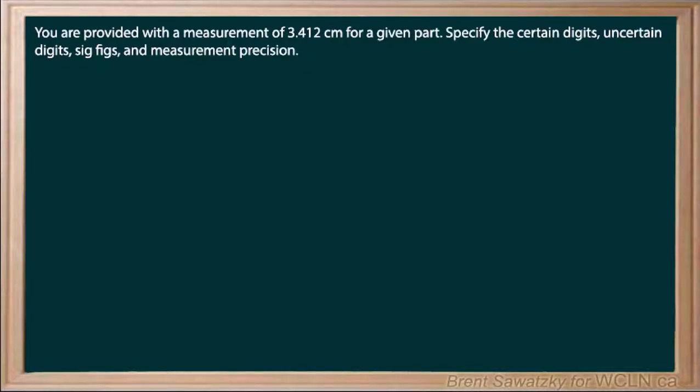Okay, so we have a number here, a measurement, 3.412 centimeters. And we're supposed to figure out a bit of the information around that, the uncertain digits, the certain digits.